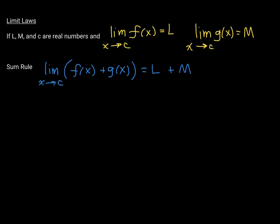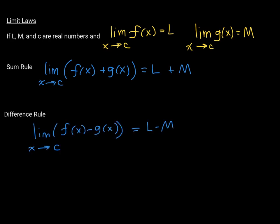First we define L, M, and c to be real numbers. We say the limit of f as x approaches c is L, and the limit of g as x approaches c is M. The sum rule says the limit of the sum of two functions equals the sum of the limits: the limit of f(x) + g(x) equals the limit of f(x) plus the limit of g(x), which is L + M. The same holds for the difference rule: the limit of f(x) - g(x) equals L - M.